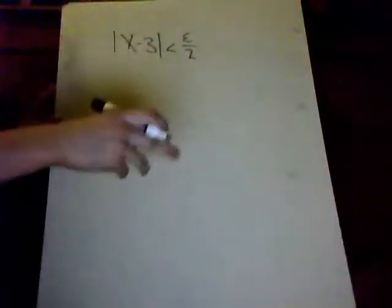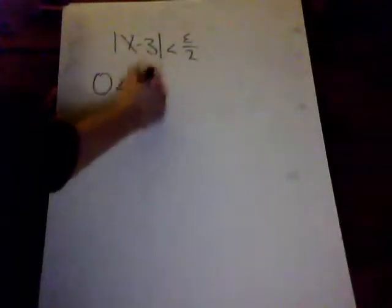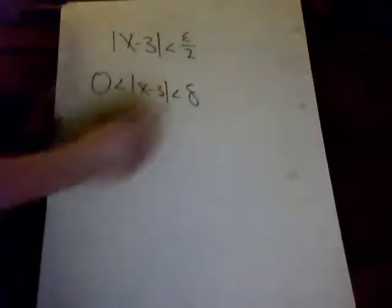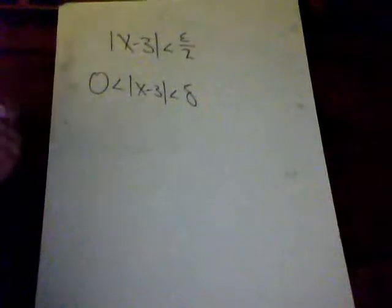Now, you'll notice that this quantity in the absolute value bars is equal to x minus a, which is 0 less than |x - 3|, which is less than delta. Okay, so, now we have sufficient information to complete the proof.